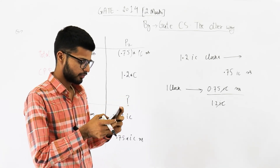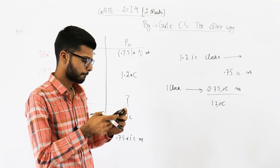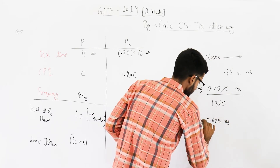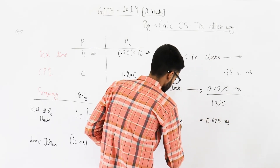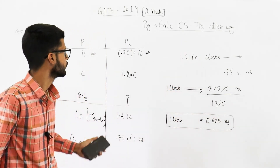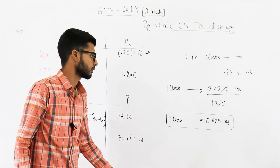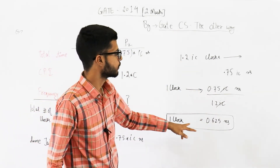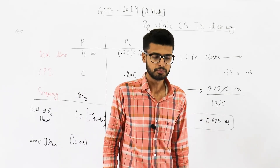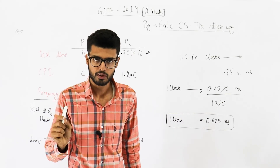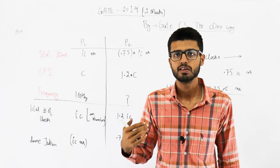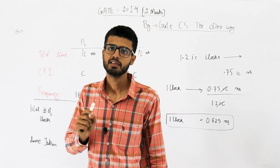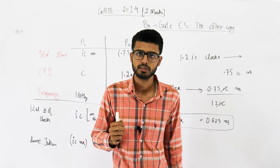0.75 divided by 1.2 equals 0.625. So for processor P2, one clock requires 0.625 nanoseconds — meaning after every 0.625 nanoseconds, a clock signal is generated. To convert to frequency, we need to find how many times per second the clock is generated.